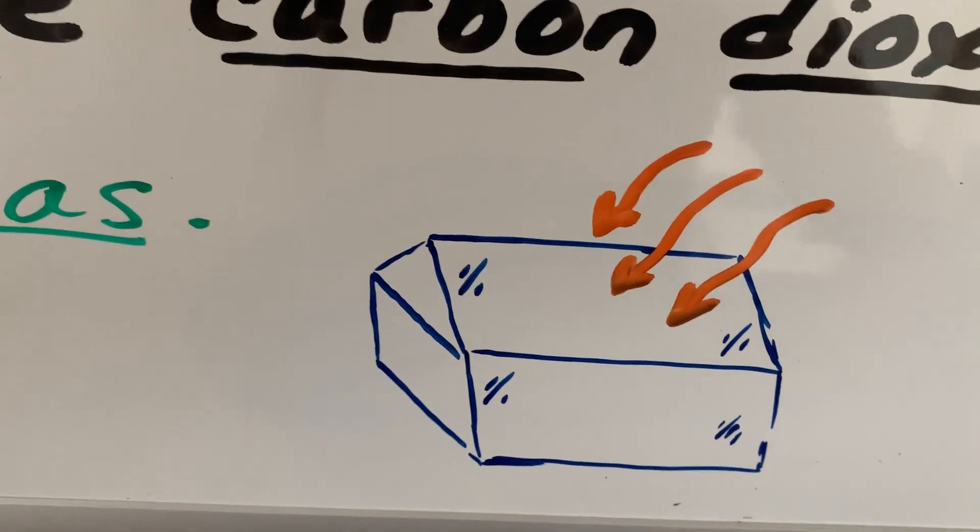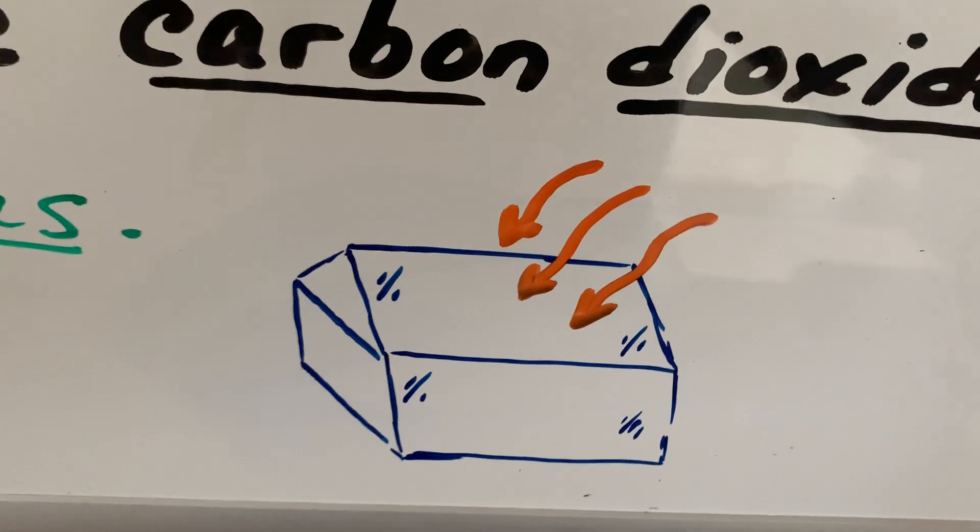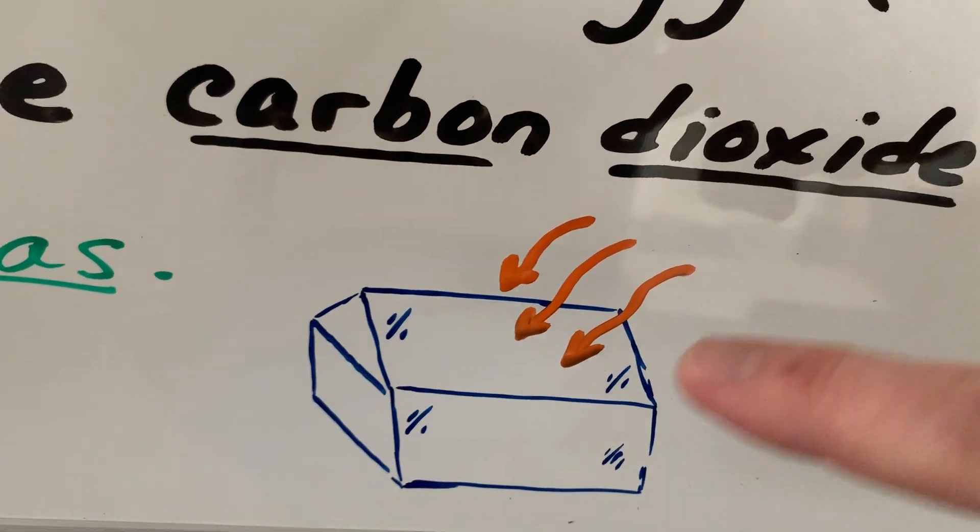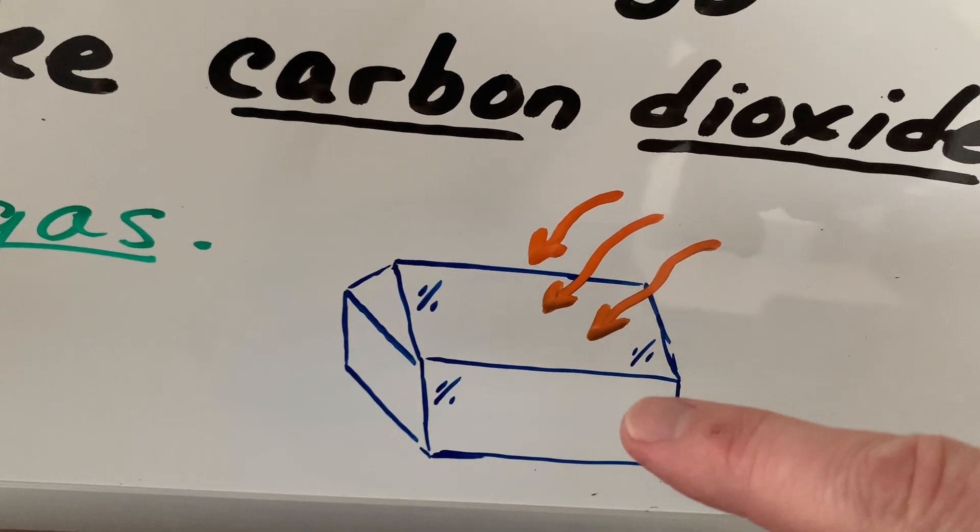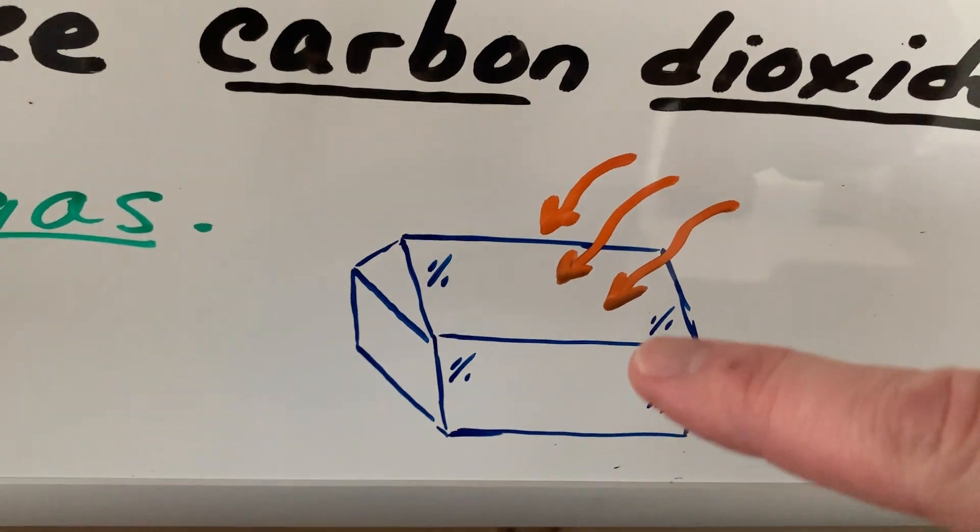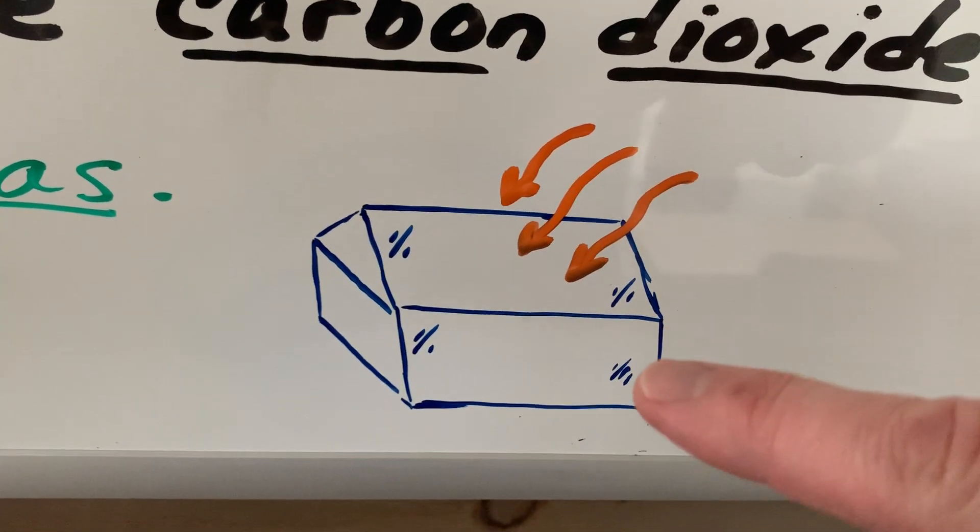And if any of you have ever seen a real greenhouse you know that it's built mostly of glass. And the reason for that is you want it to be transparent to sunlight. You want sunlight to be able to come through and pass into the building so that the plants that you're using inside can use that sunlight to do the photosynthesis that they need to do to make their own energy.